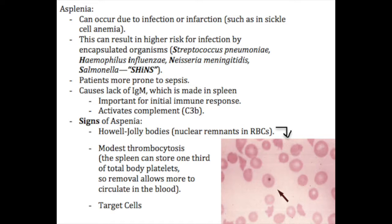One commonly tested idea on the USMLE is that patients without a spleen, either through a splenectomy or through infarction such as in sickle cell anemia, tend to have a problem fighting encapsulated bacteria, and this can oftentimes result in sepsis and overwhelming infection. So why is it that people without a spleen have a problem fighting encapsulated bacteria in particular?